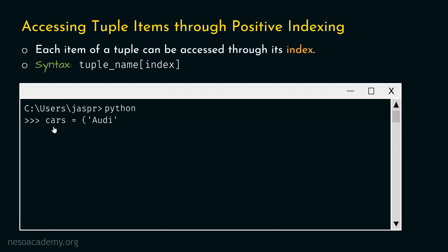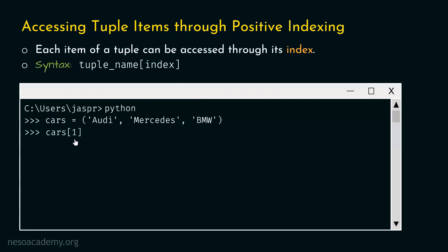Let's type this command: cars equal to Audi, Mercedes, BMW. So there are a total of three items in this tuple. Let's say that we are interested in accessing the item Mercedes. This item has an index of one, because we know that index always starts from zero. Therefore, Audi receives index zero, Mercedes receives index one, and BMW receives index two. So if we want to access Mercedes, we must specify one within square brackets. Let's hit enter and type cars[1]. We are getting Mercedes as the result.